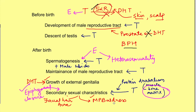It is the enzyme aromatase which acts on testosterone and converts it to estrogen. So these were the functions of testosterone acting directly as testosterone, as dihydrotestosterone, or as estrogen.